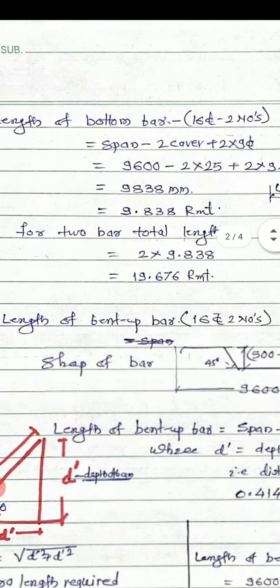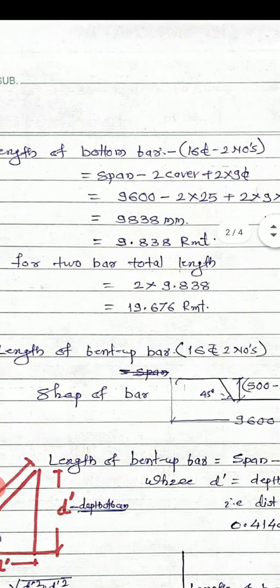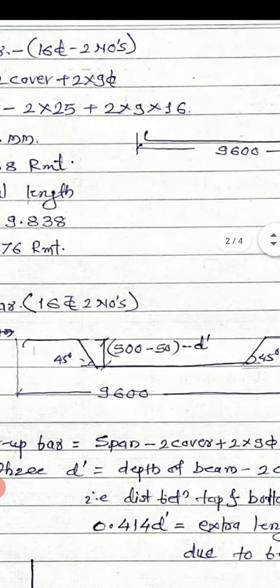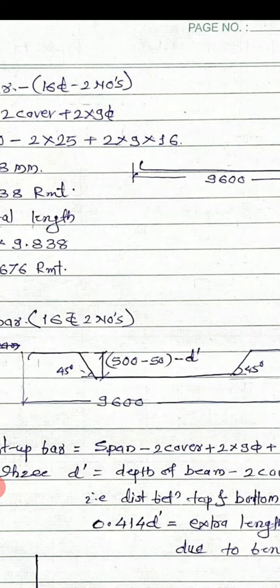Now we are going for the bent-up bar. The bent-up bar has a notation called d-dash. The bar has a bottom part and a bent part, and the distance between top and bottom is called d-dash. The bent-up bar is bent at 45 degrees at L by 4.